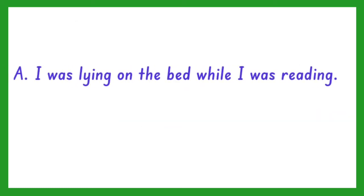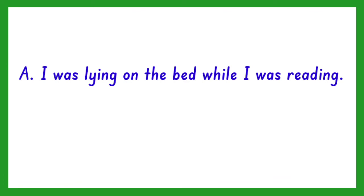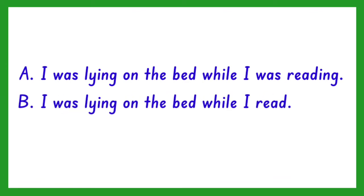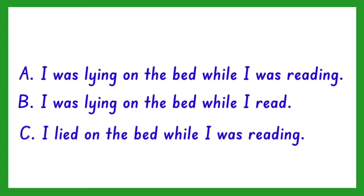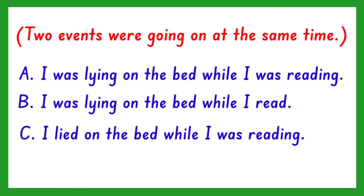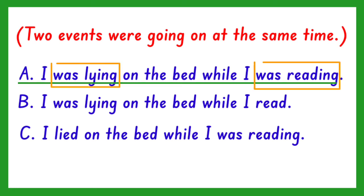Number 2. A: I was lying on the bed while I was reading. B: I was lying on the bed while I read. C: I lied on the bed while I was reading. Since the two events were going on at the same time in the past, the answer is A. Both of them must take the past progressive tense of the verb.